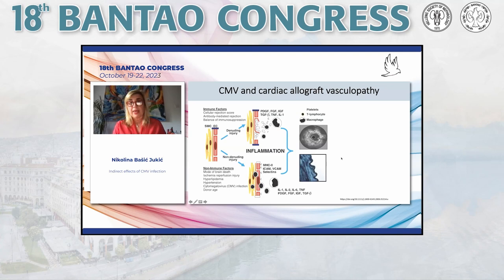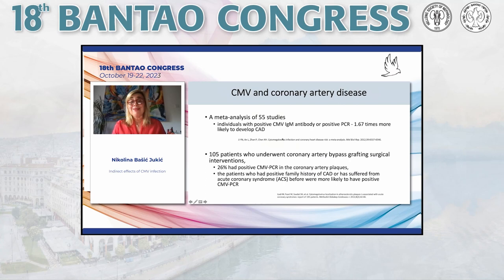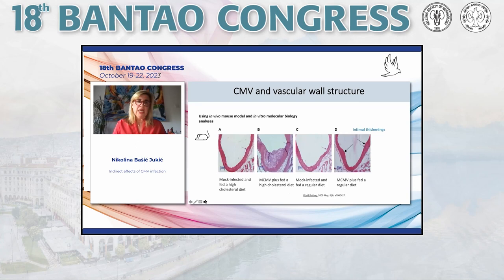In allograft vasculopathy after heart transplantation, CMV has a clear role in the development of changes on the blood vessel wall and is included among non-immune factors associated with cardiac allograft vasculopathy. In a meta-analysis of 55 studies, individuals with positive CMV IgG antibody or positive PCR had a 67% higher chance of developing coronary disease. In 105 patients undergoing coronary artery bypass grafting or other surgical intervention, 26% had positive CMV PCR in the coronary artery blocks.